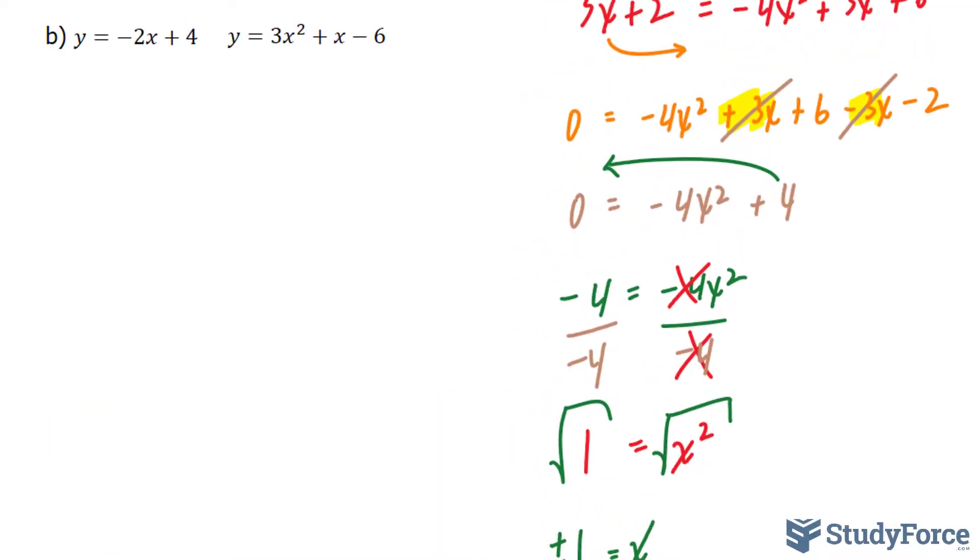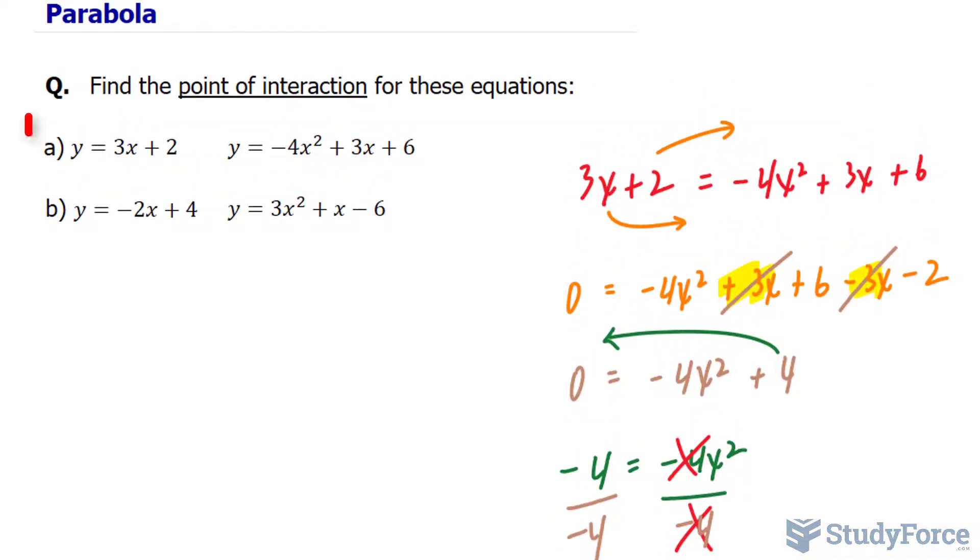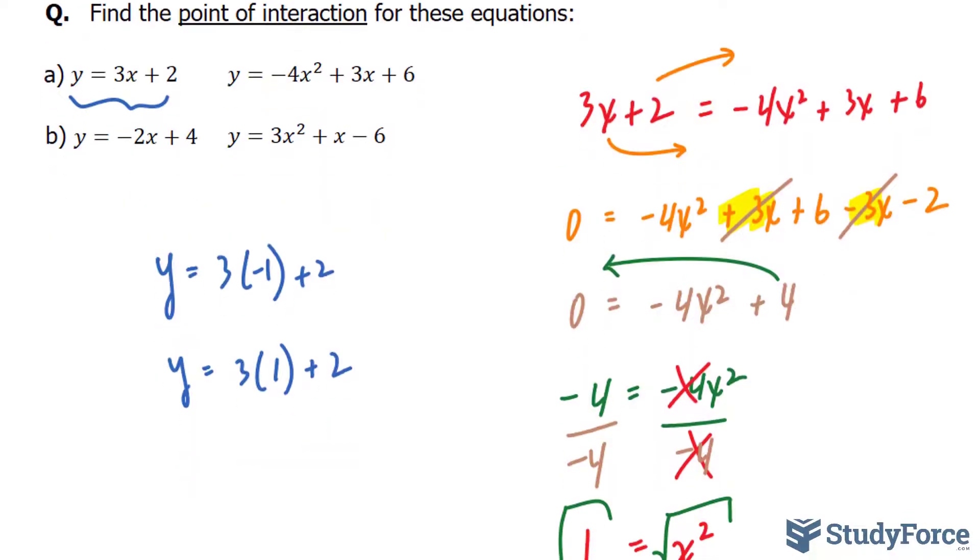I'll take plus 1 and minus 1 and substitute them into this equation to get their corresponding Y coordinates. Y is equal to 3 times negative 1 plus 2, and Y is equal to 3 times positive 1 plus 2. Let's answer both of these. 3 times negative 1 makes negative 3, plus 2 is negative 1. And 3 times 1 is 3, plus 2 is 5.